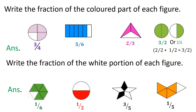First question: write the fraction of the colored part of each figure. In the first figure, out of four, three are colored — so it is three upon four. In the second, out of six, five are colored — so it is five upon six. In the third, out of three, two are colored — so it is two upon three. In the last figure, the first circle has two upon two colored, and in the second, one upon two is colored. So two upon two plus one upon two will be three upon two. You can even write one and a half.